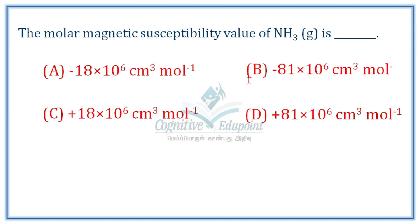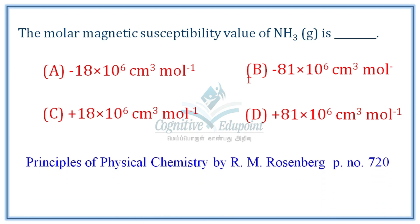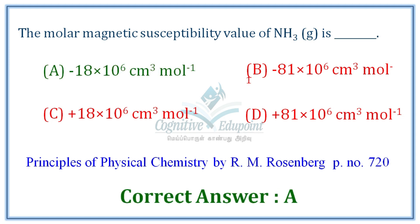Next question: the molar magnetic susceptibility value of ammonia in the gaseous state. This is a very direct, memory-based question rather than a calculation. The correct answer is A: minus 18 × 10⁻⁶ cm³ per mole.